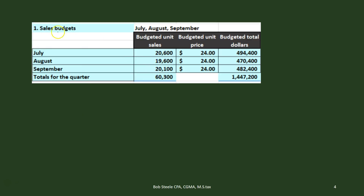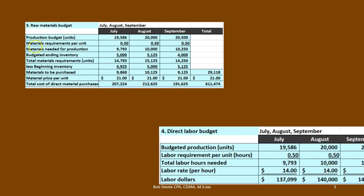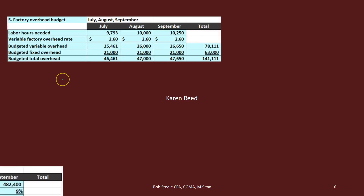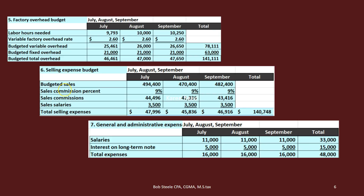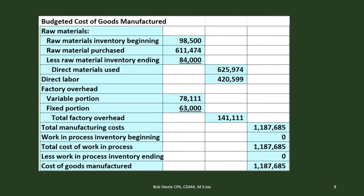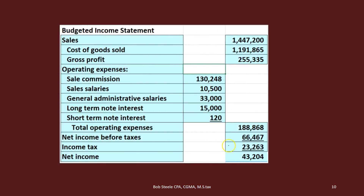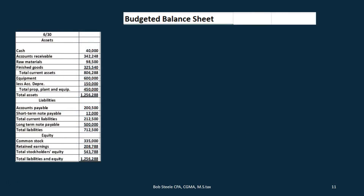So we've done this so far. We've already done the sales budget — that's step one. Step two, we used that to do the production budget. Then we had the raw materials budget, the direct materials budget, the factory overhead budget, the selling expense budget, and the general and administrative expense budget. We used that to create the cash budget, and then the budgeted cost of goods manufactured so that we can get the cost of goods manufactured number that we would then use to calculate the cost of goods sold number. We used that to then calculate the income statement. We've done all that so far, and we're going to bounce back and forth to some of these items in order to create the balance sheet.